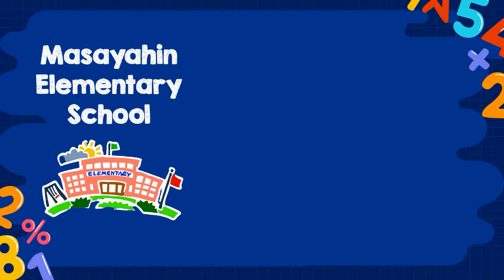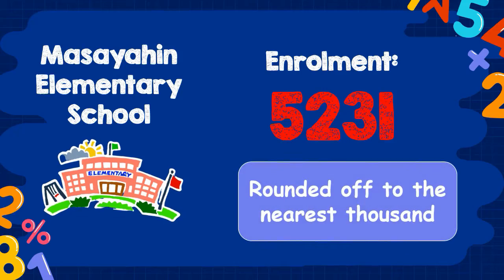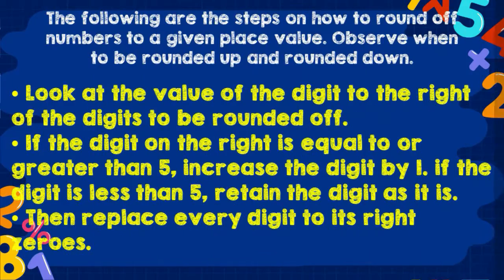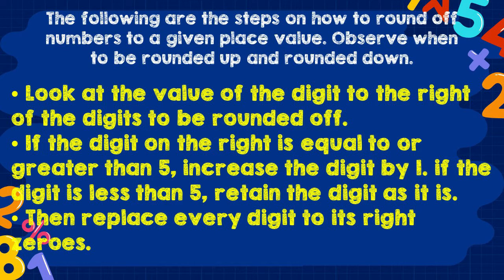Let's have some examples. Mansayain Elementary School has an enrollment of 5,231. It can be rounded off to the nearest thousand. The following are the steps to round numbers to a given place value. Observe when to round up and round down: if the digit on the right is equal to or greater than 5, increase the digit by 1. If the digit is less than 5, retain the digit as it is. Then replace every digit to its right with zeros.